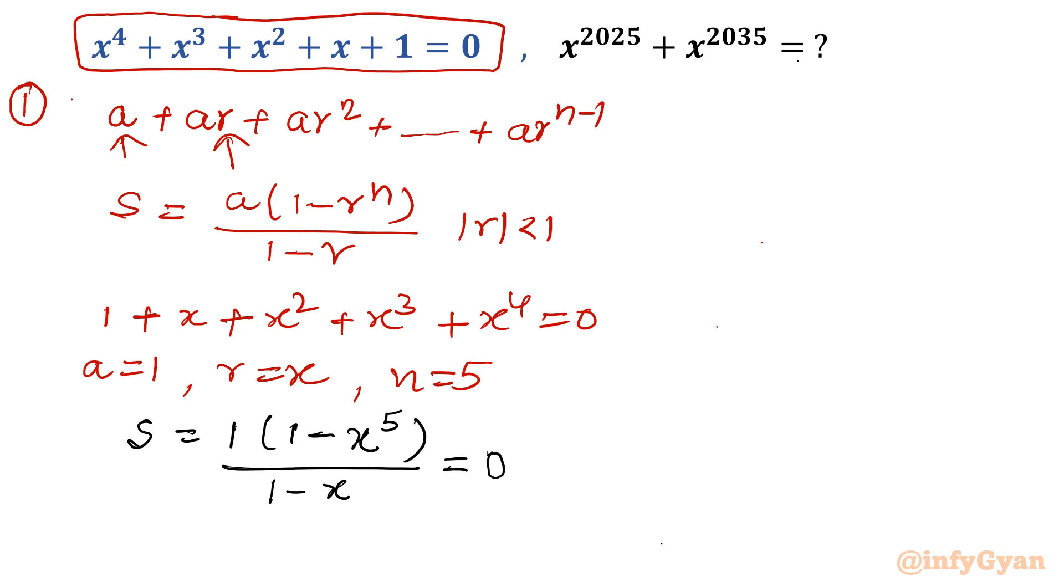Now one thing is clear: x cannot be equal to 1. From this sum expression and you can see the original equation is not satisfying x equal to 1, LHS and RHS won't be equal. If this equation holds true, that means 1 minus x power 5 is equal to 0. Or in other words we can write x power 5 is equal to 1.